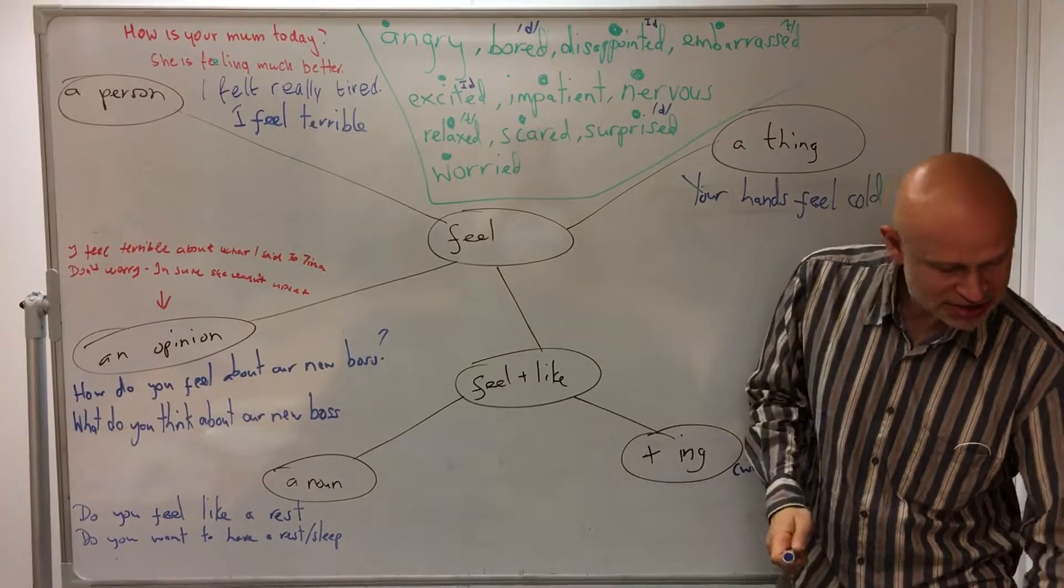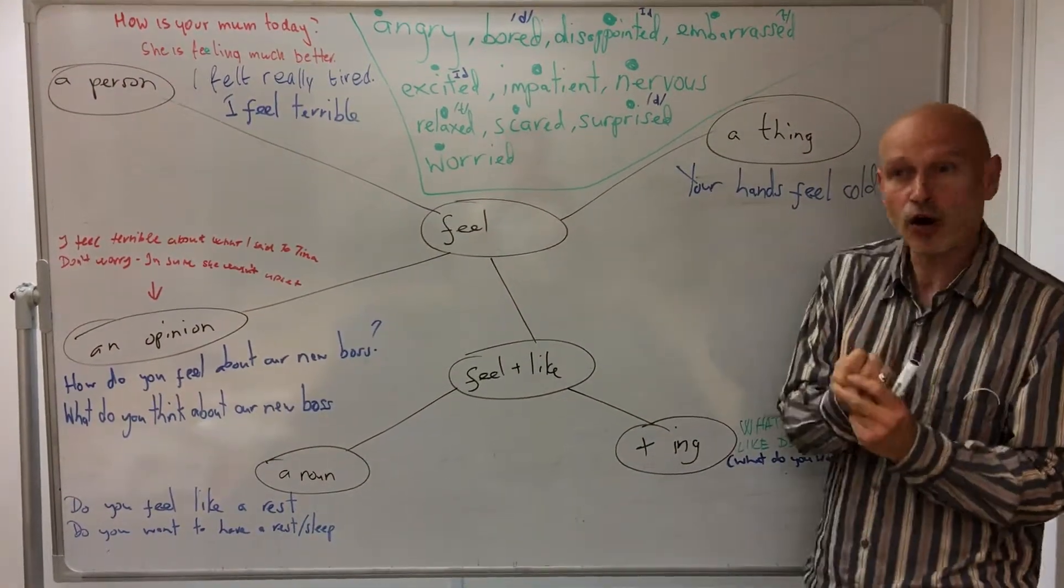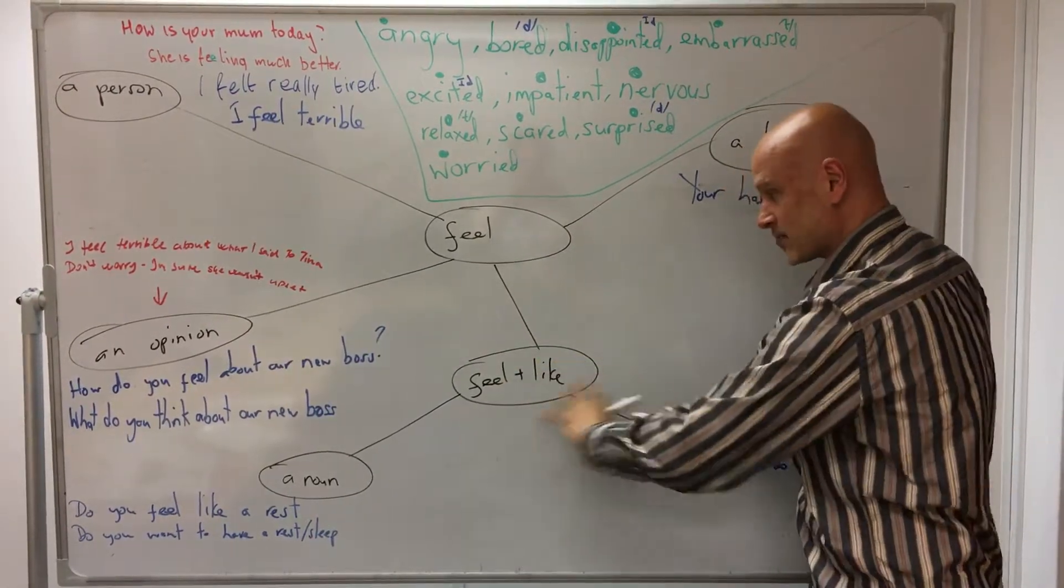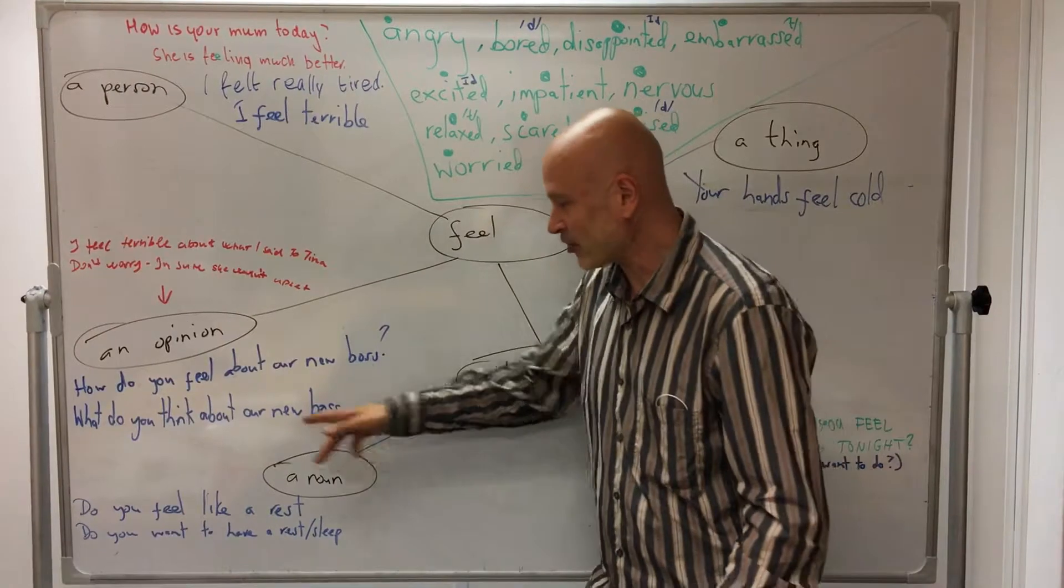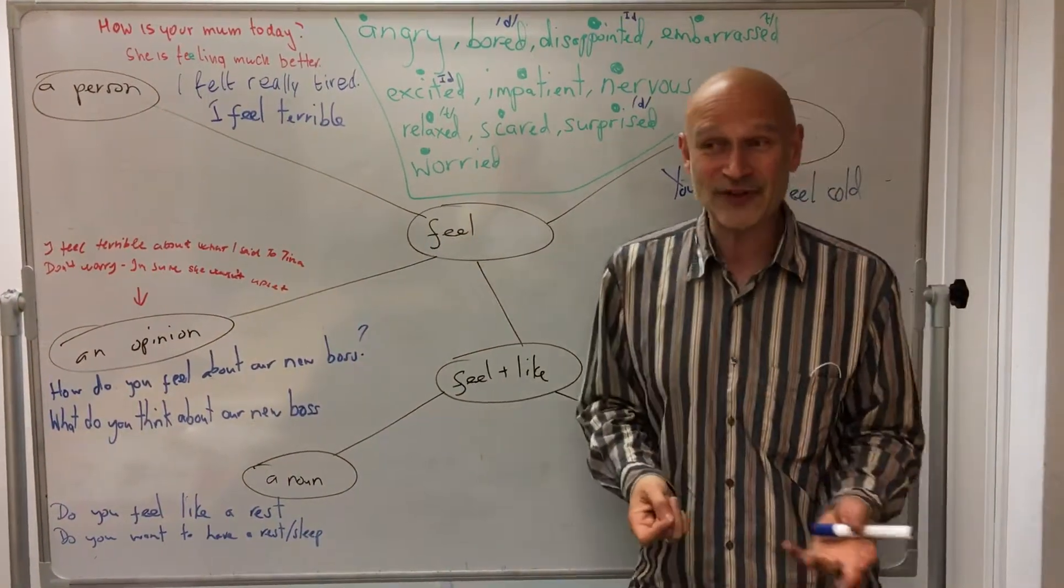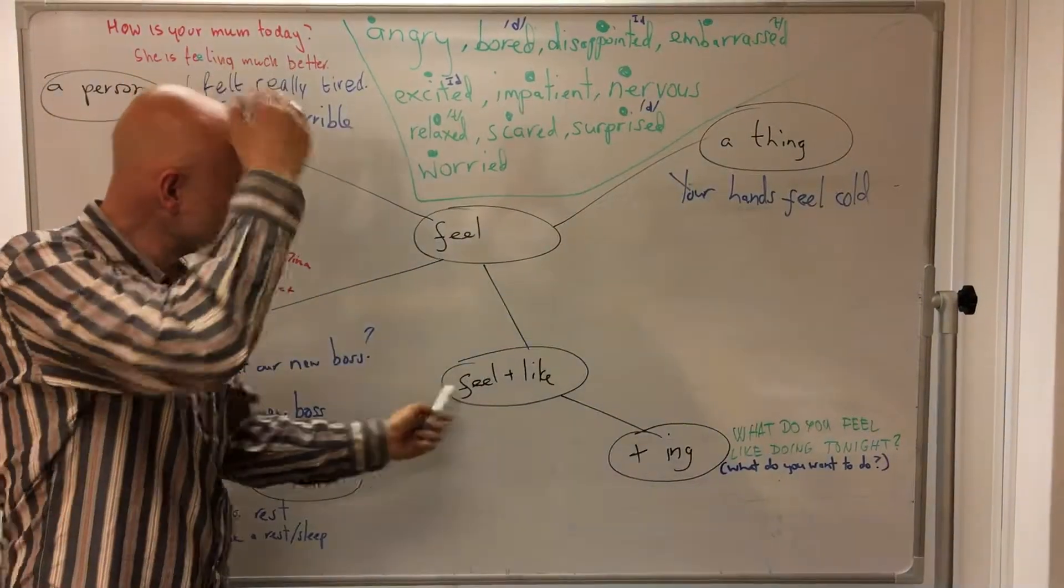We can use it with a thing, so you know, this table feels hard, this chair feels comfortable, your hands feel cold. We can use it with 'feel like' in two different ways. We can feel like a noun: I feel like a rest, I feel like a cup of coffee, something like that, I feel like a bar of chocolate.